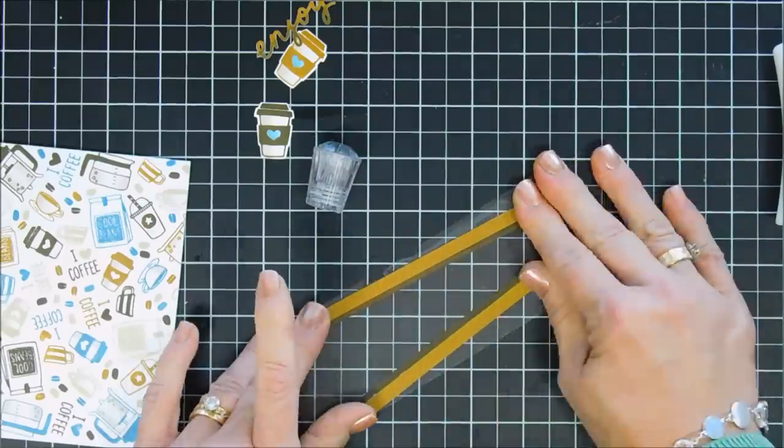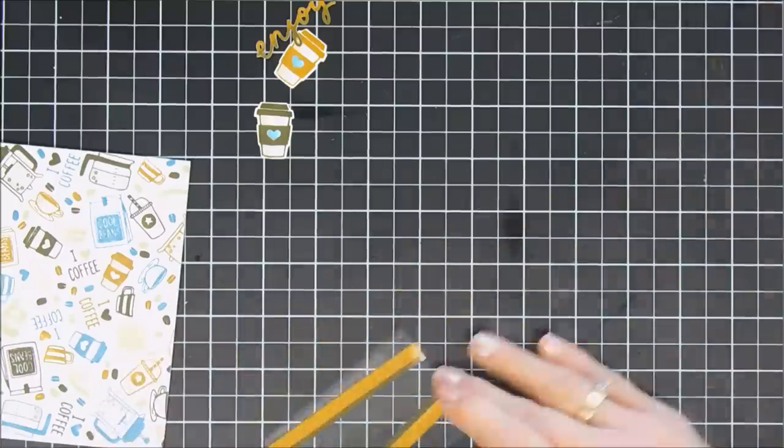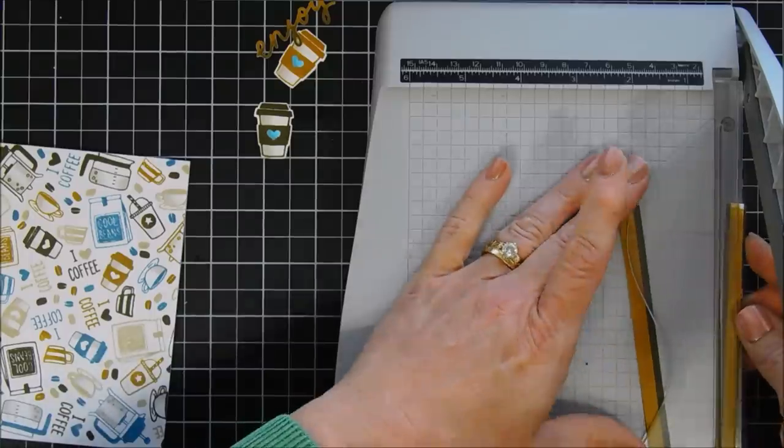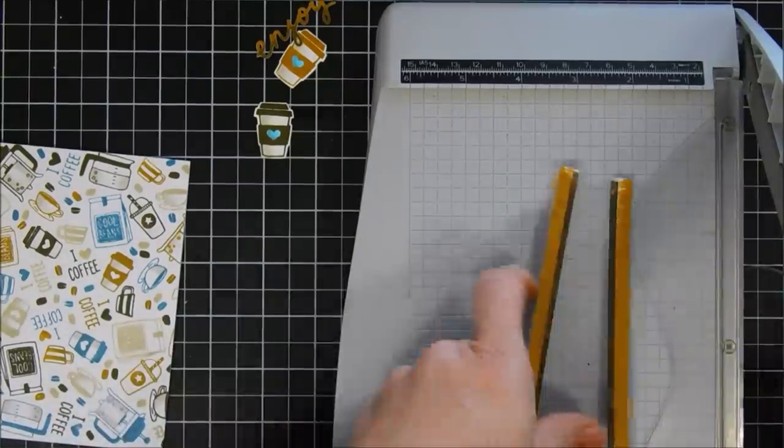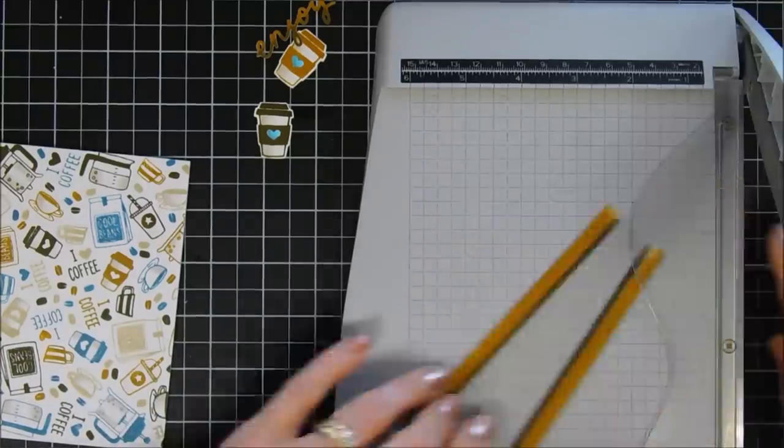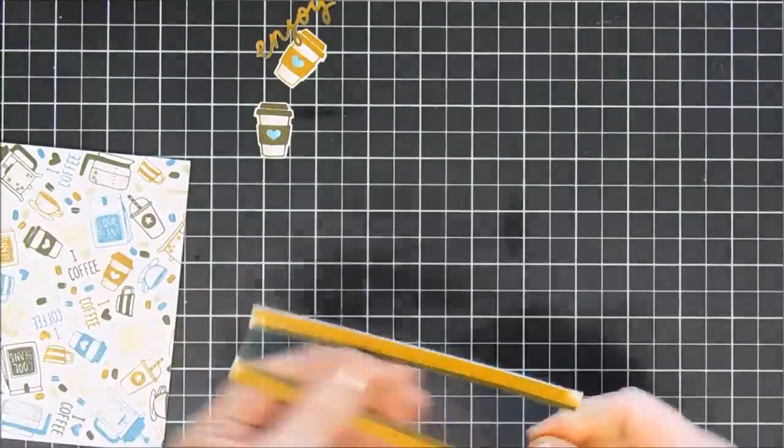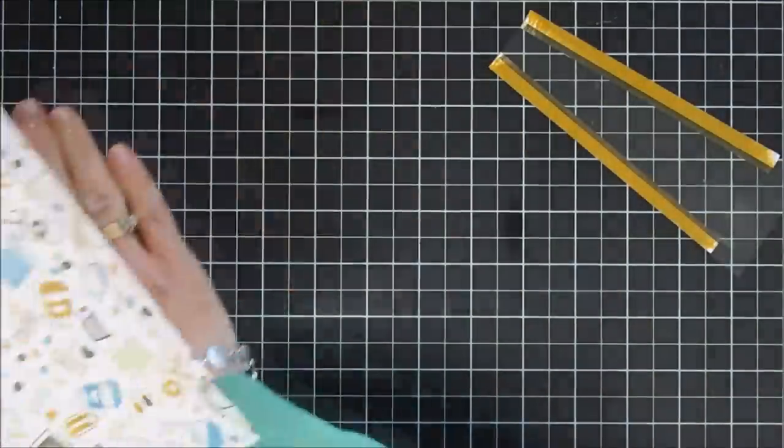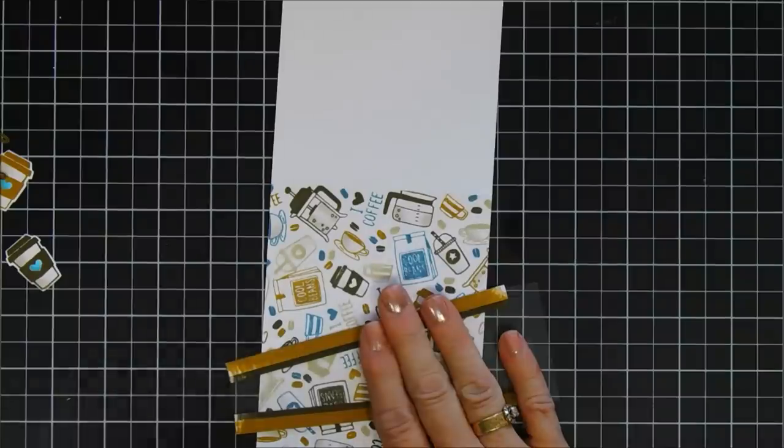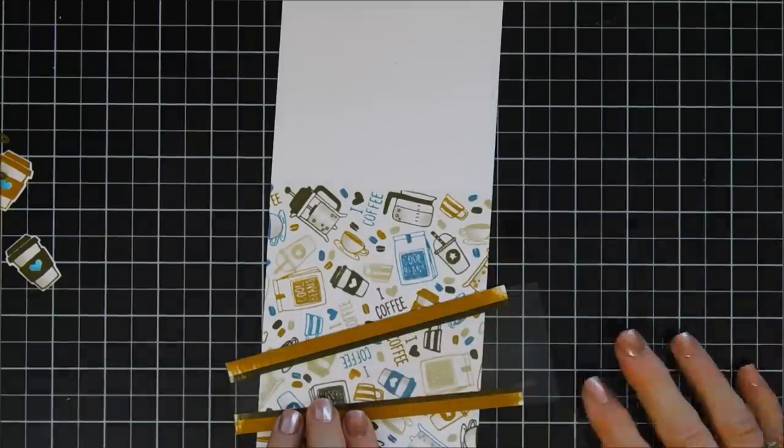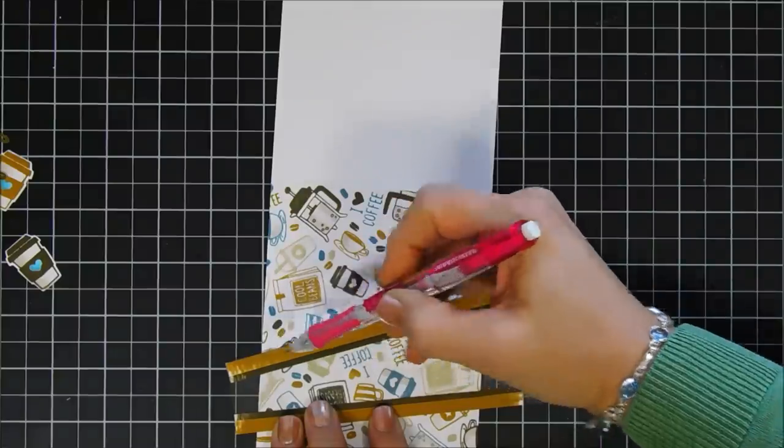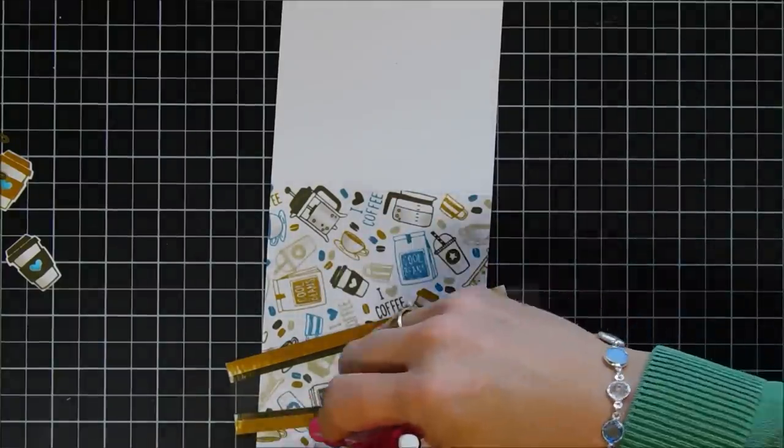Now I'm going to line my plastic piece right over the front of my card, kind of positioning it where I want it. Then I'm going to use the pencil and mark the very top and then I'm also going to mark the very bottom where that lighter brown ink is. Once I mark those I'm going to take my paper trimmer and trim those two pieces out.